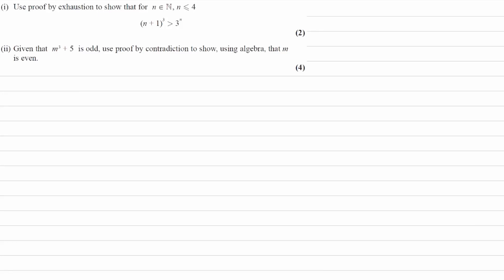Use proof by exhaustion to show that for n is a natural number, where n is less than or equal to 4, that n plus 1 all cubed is greater than 3 to the power of n.